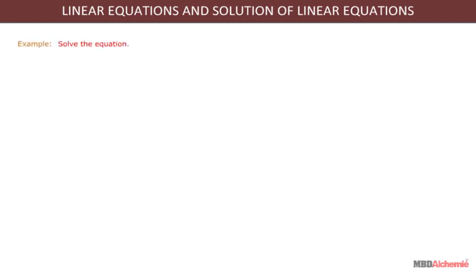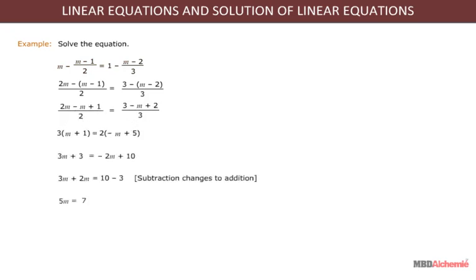For example, solve the equation M minus half of M minus 1 is equal to 1 minus 1 third of M minus 2. On taking LCM on both sides and solving it, we get M is equal to 7 upon 5.